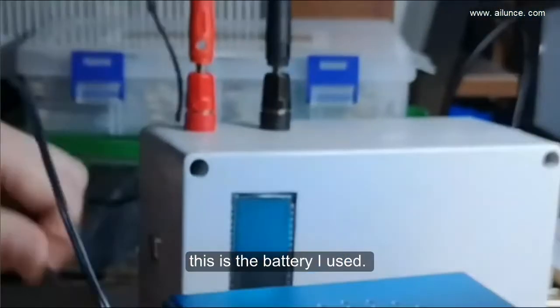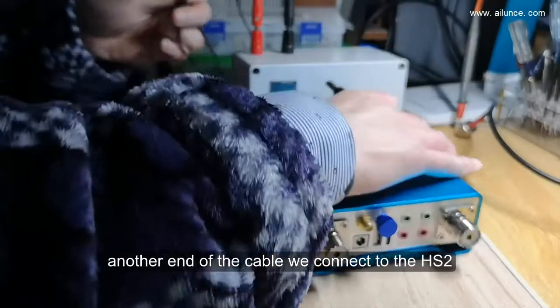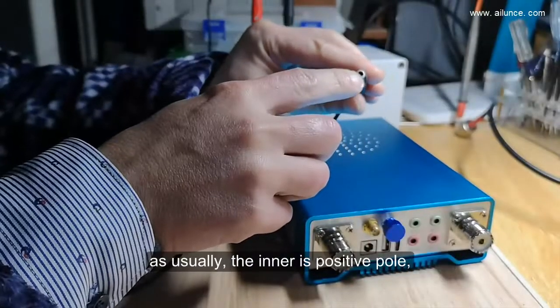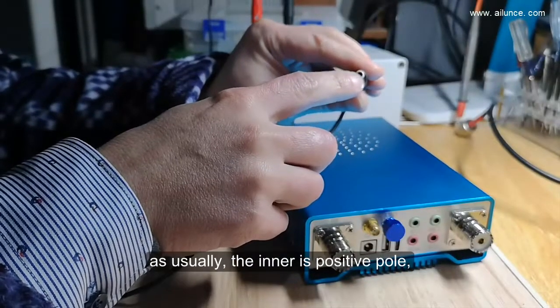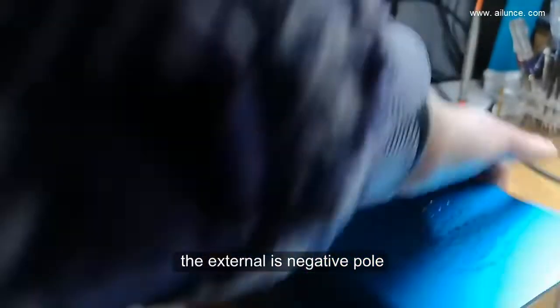This is the battery I used. Now the power connection is correct. Connect another end of the cable to HS2. As usual, the inner is positive pole, the external is negative pole.